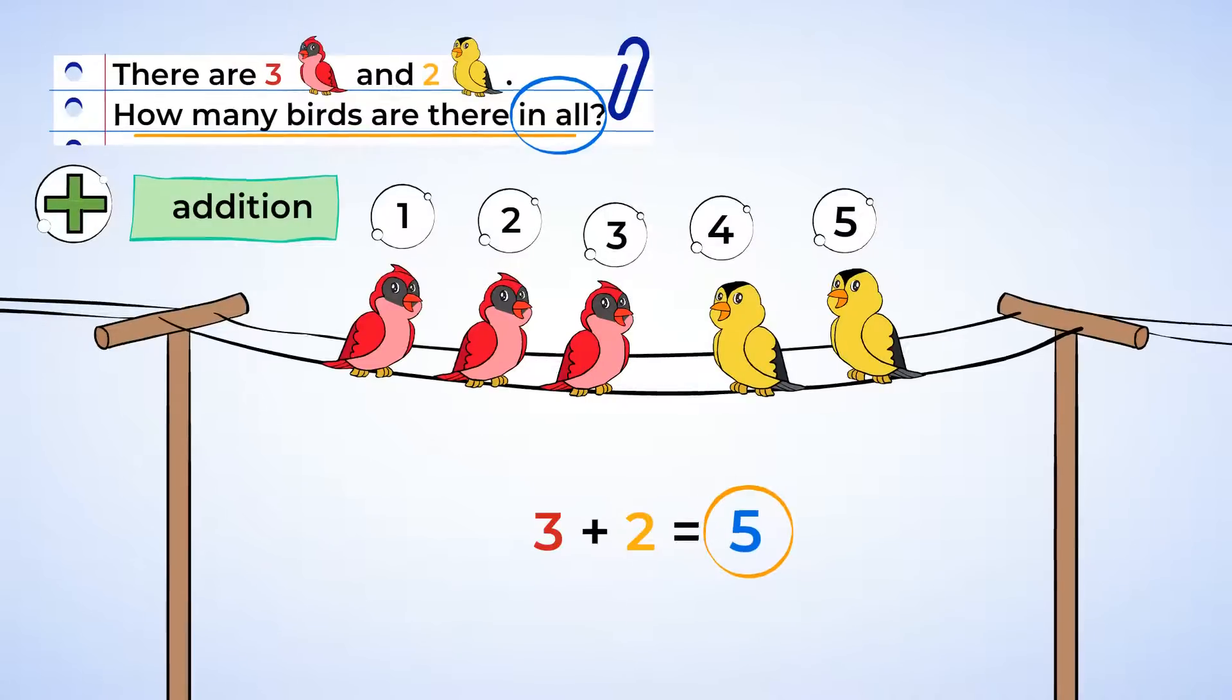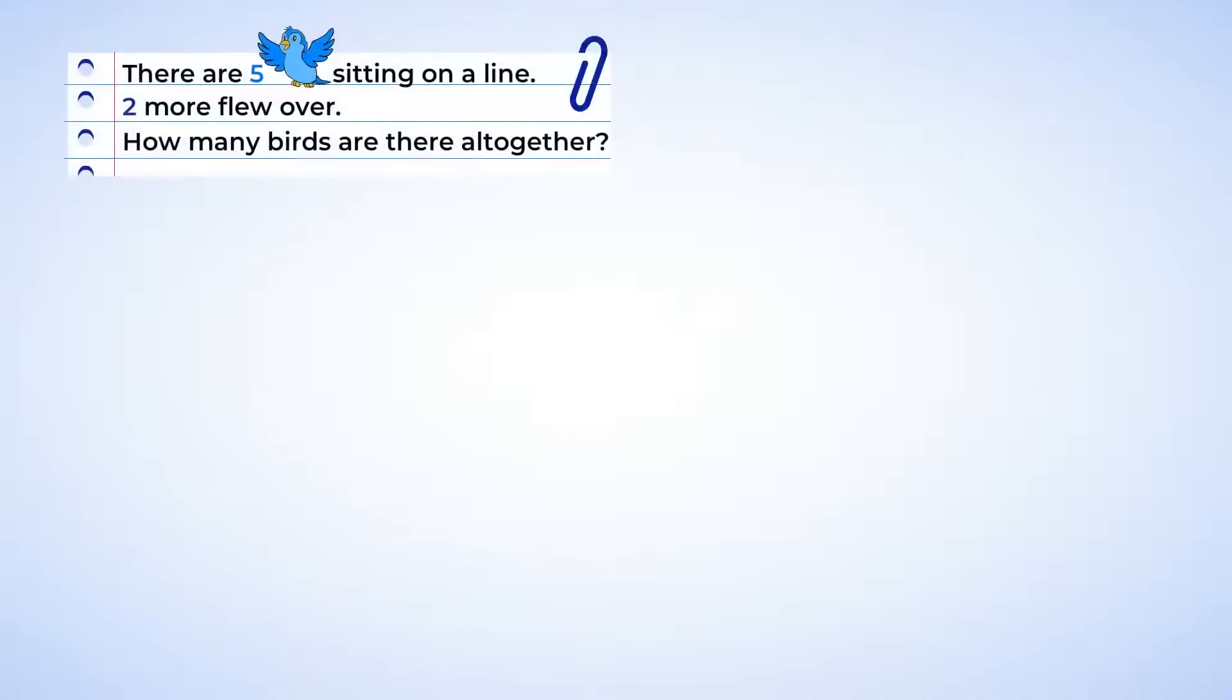And Will saw some other birds. He said there were five birds sitting on a line. Two more flew over. How many birds were there all together? Well, this is a word problem without any pictures. So we're going to have to use our mighty brains to figure this out.